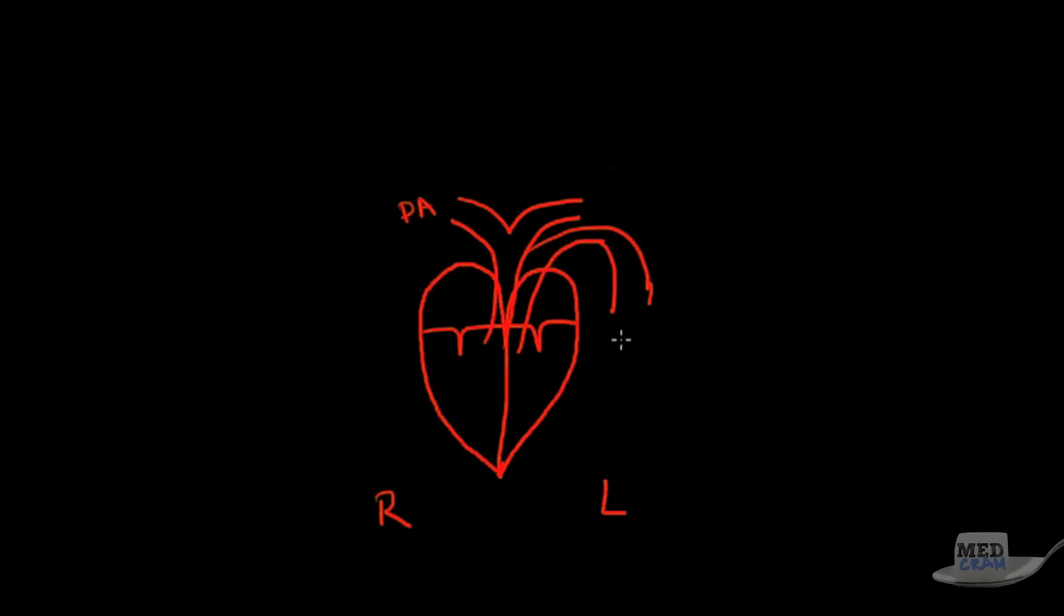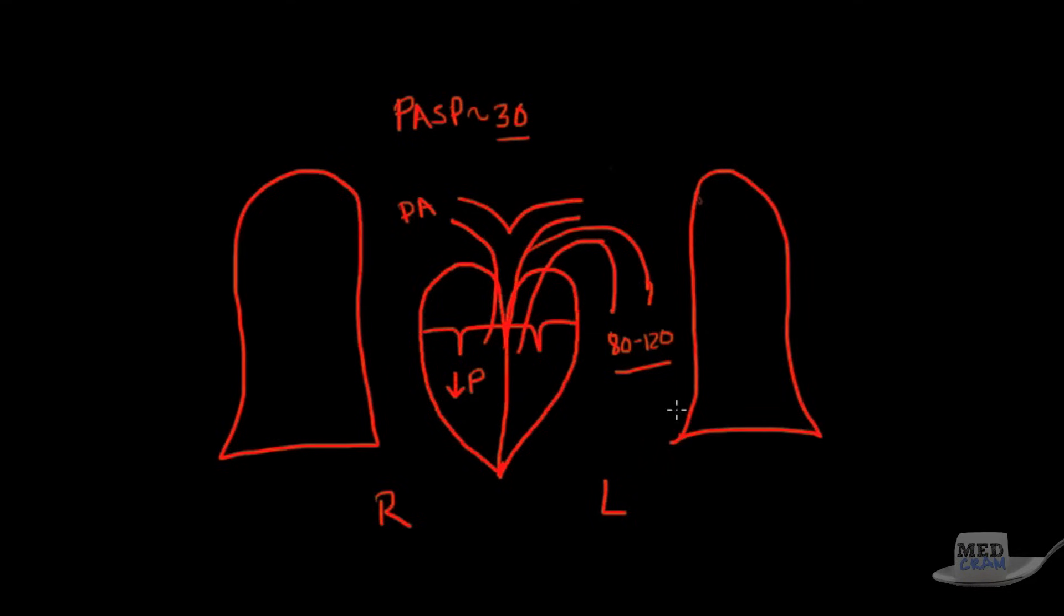The left side when it pumps blood to the aorta, the pressures that we usually see there are anywhere from 80 to 120 millimeters of mercury. Not so on the right side. The right side is used to pumping very low pressures. In fact the typical pulmonary artery systolic pressure ranges around 30 at most in terms of normal. 20 to 30 is the general range.